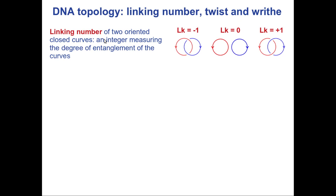Let's start from the definition of the linking number. Let's consider two closed curves — not specifically about DNA yet, but two closed curves. The linking number is an integer that is a measure of the degree of entanglement of these two curves. For instance, the linking number is zero if these two curves are not entangled, so they can be separated and pushed far apart from each other.